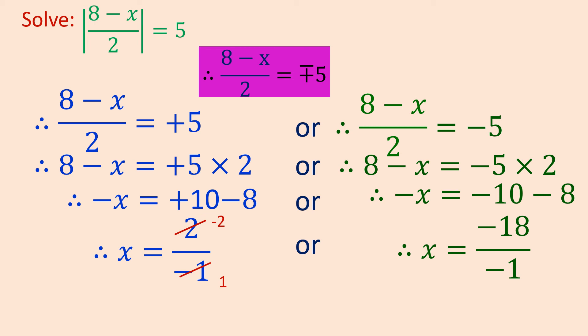You know that opposite signs when we divide give you negative. The value of x will be minus 2. On the other side, minus 1, 1 time, and minus 18, 18 times. When you divide minus with minus, you get a plus sign, and the answer becomes plus. Therefore, x equals to 18.